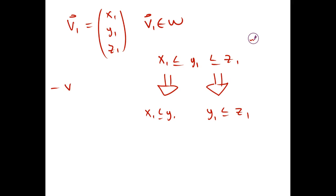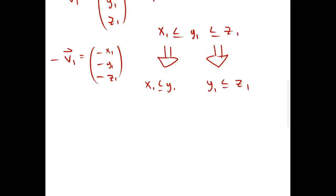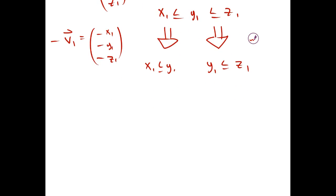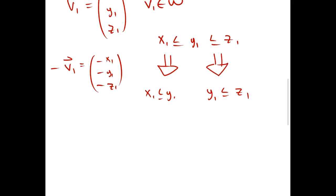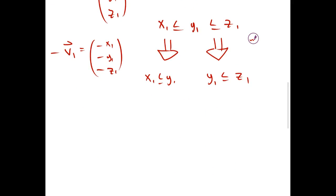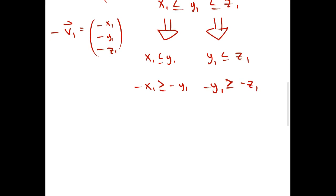Now if we look at a scalar multiple of V1, negative V1, which is (-x1, -y1, -z1), we check if it's also in W. We can do this by multiplying both sides by negative 1. But when you have an inequality and you multiply both sides by negative, you have to flip the sign.